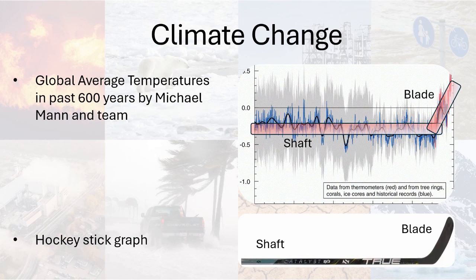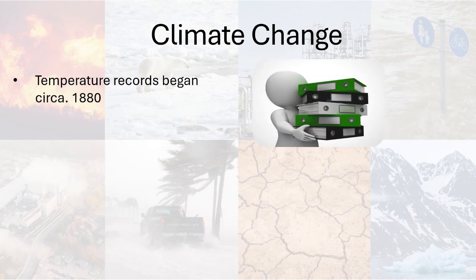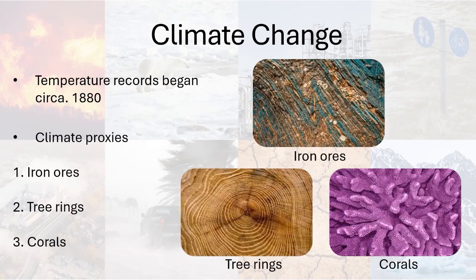Since temperature records began roughly around 1880, scientists used climate proxies to determine the average temperature before this time. It is done by assessing iron ores, tree rings, corals, etc. — it's like having atmospheric conditions frozen or trapped in these ores and rings — and scientists bore or cut through these layers to decode the required data.